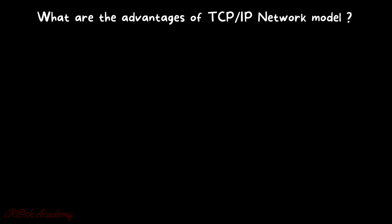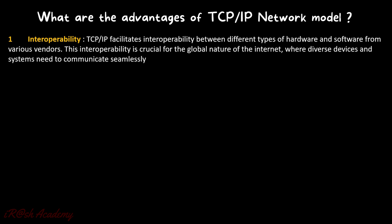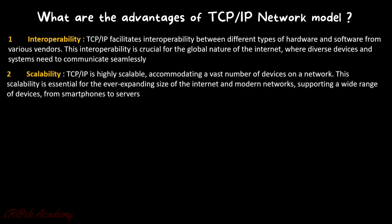Now let's talk about the advantages of the TCP/IP network model. Point one: interoperability. TCP/IP facilitates interoperability between different types of hardware and software from various vendors. This interoperability is crucial for the global nature of the Internet. Point two: scalability. TCP/IP is highly scalable, accommodating a vast number of devices on a network. This scalability is essential for the ever-expanding Internet, supporting a wide range of devices from smartphones to servers.